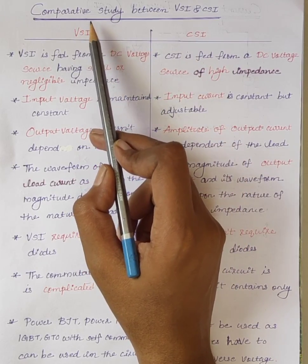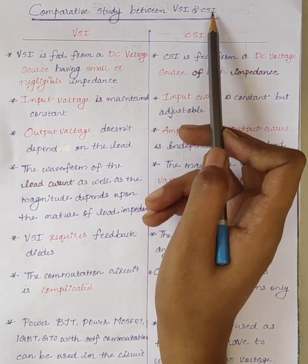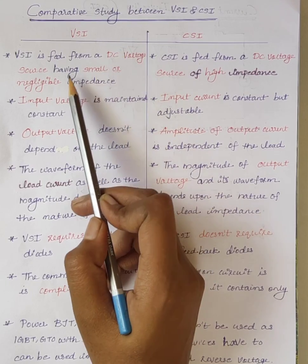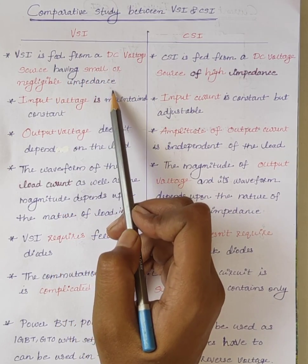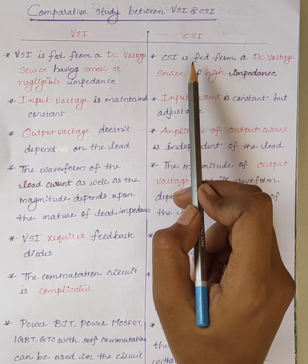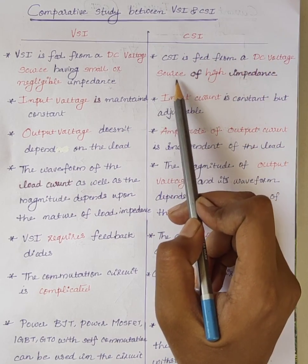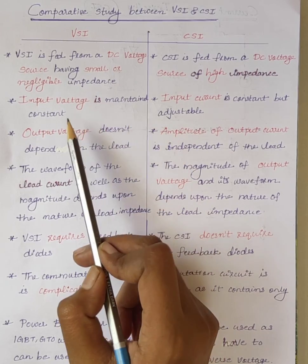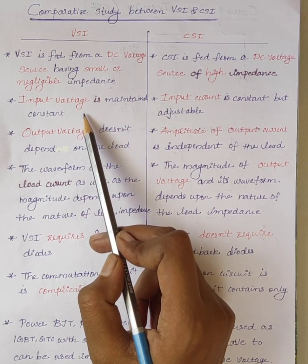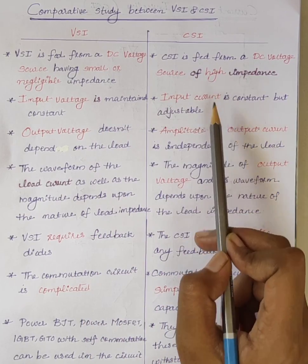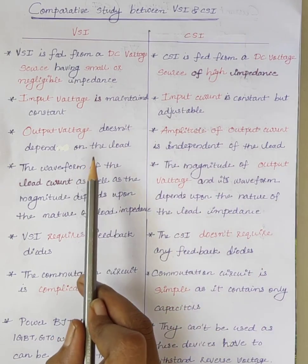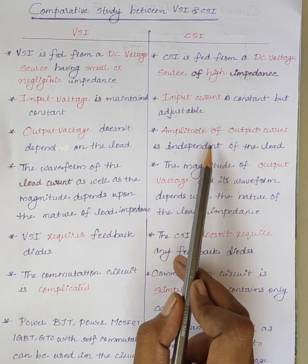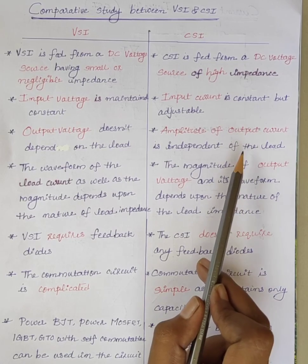Next, we will see the comparison between voltage source inverter and current source inverter. Voltage source inverter is fed from a DC voltage source having small or negligible impedance. In case of current source inverter, it is fed from a DC voltage source of high impedance. The input voltage is maintained constant in voltage source inverter, but in current source inverter, input current is constant. In voltage source inverter, the output voltage does not depend on the load. In current source inverter, the output current does not depend on the load.